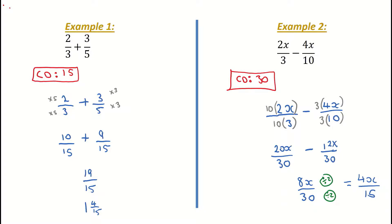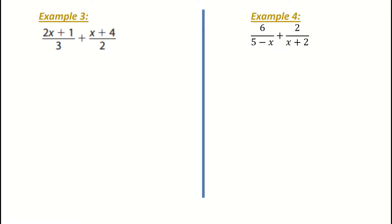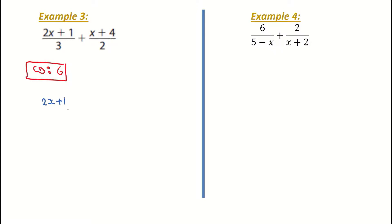Now let's look at example 3. I'm going to multiply the 3 by the 2 to get my common denominator, which gives me 6. So my CD is 6. I then write down my two fractions: it is 2x plus 1 over 3, plus x plus 4 over 2.